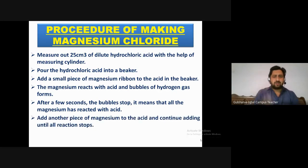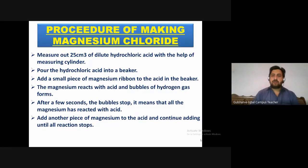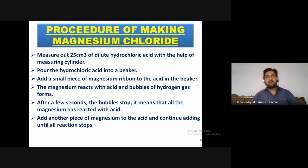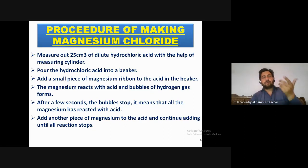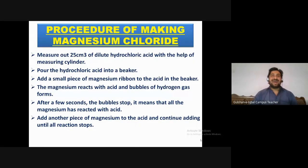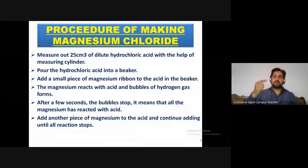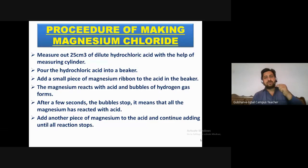It means all the magnesium has reacted with the acid. So what you do is repeat the process — add another small piece of magnesium to the acid, stir it with a glass rod, and observe the bubbles forming again. When bubbles form, you add another piece of magnesium to the acid.